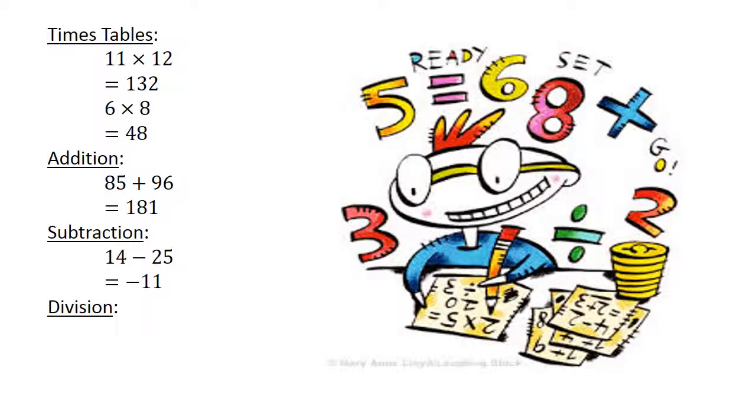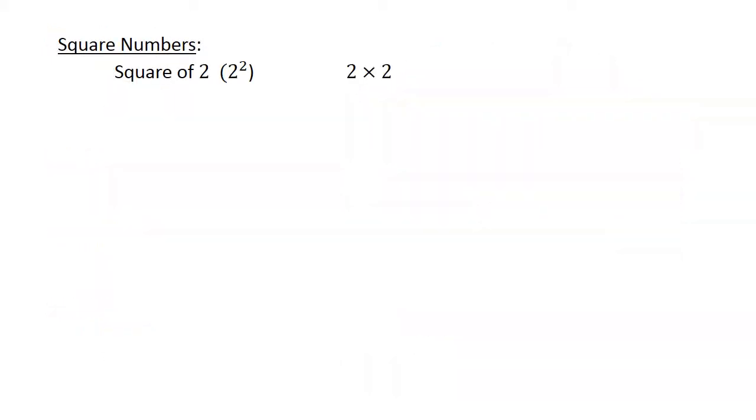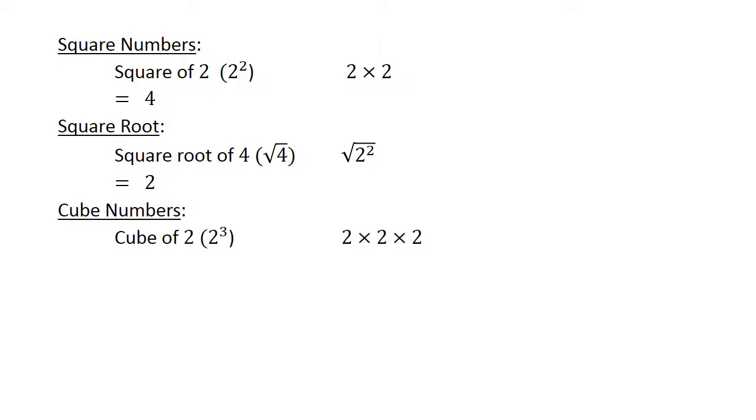Division: 8 divided by 8 equals 1. Square numbers: Square of 2 equals 4. The square root of 4 equals 2. Cube of 2 equals 8, and the cube root of 8 equals 2.